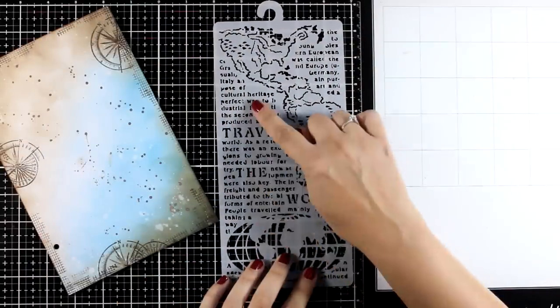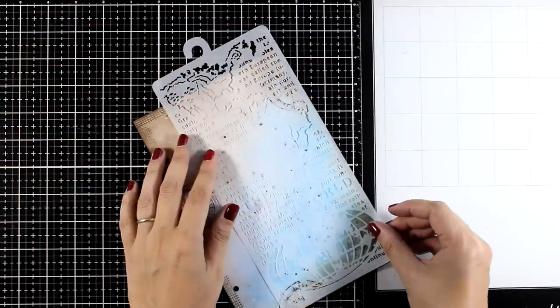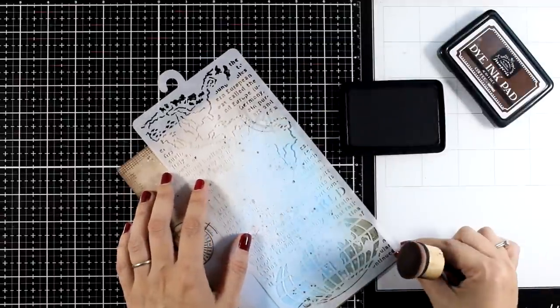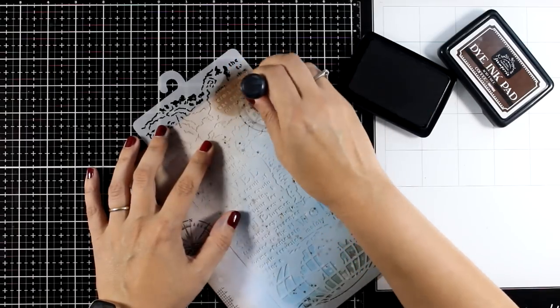I'm going for a travel themed page today so I'm going to use my new stencil. This is my travel themed stencil that gives you a map, lots of words as well as the globe. So this is step number four, stenciling.